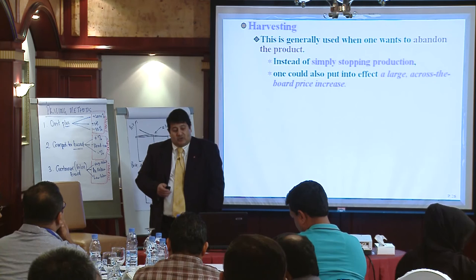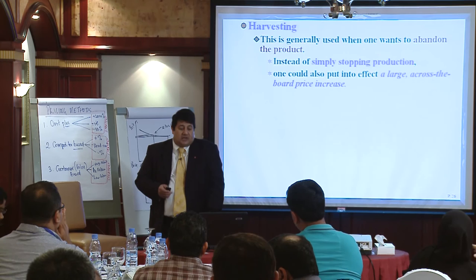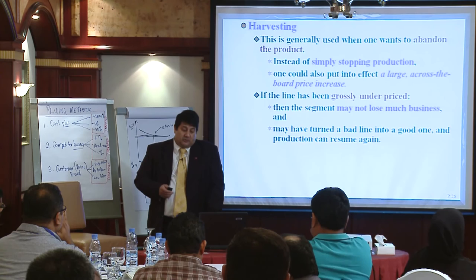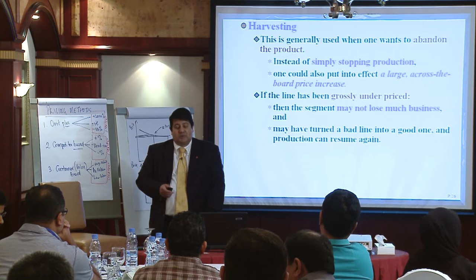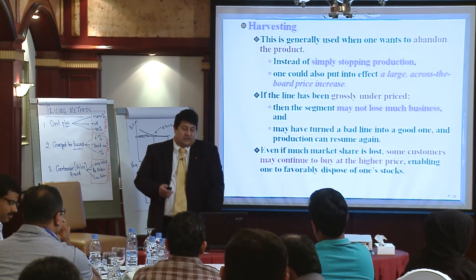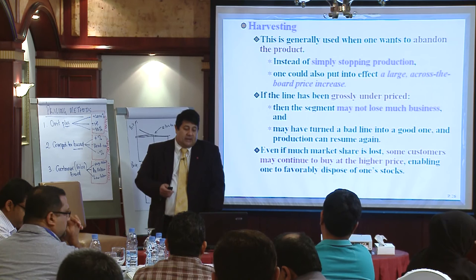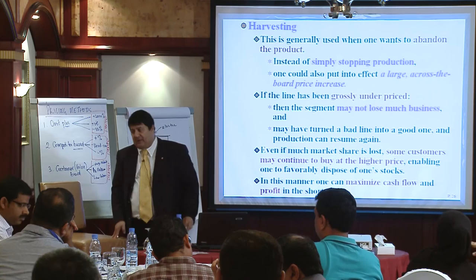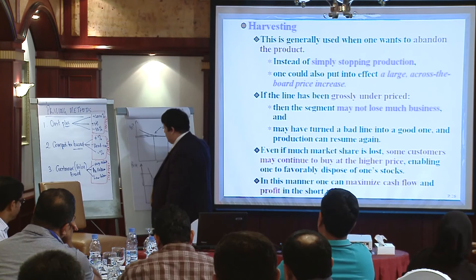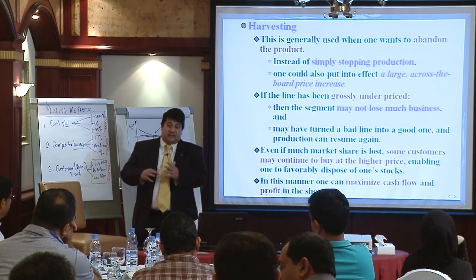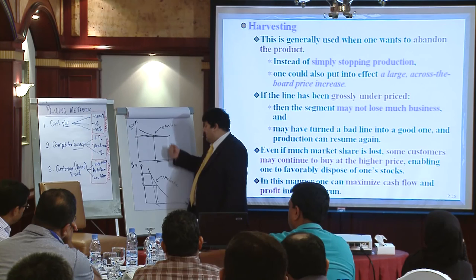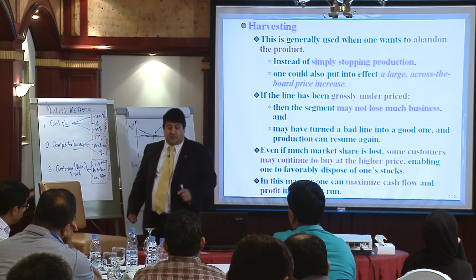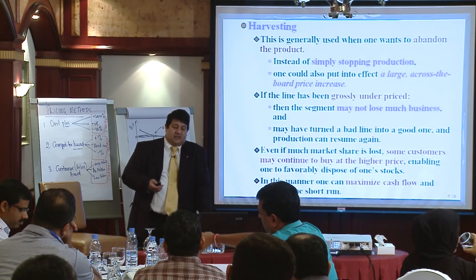Lastly, there is harvesting — used when one wants to abandon a product that has stopped in production. One could effect a large across-the-board price increase. If the line has been grossly underpriced, the segment may not lose much business and may have turned a bad line into a good one. Even if much market share is lost, some customers may still buy at a high price. In this manner you can maximize cash flow and profit in the short run. There are also companies that go against the trend — when they have an inelastic product they may price it like an elastic one, crossing boundaries.